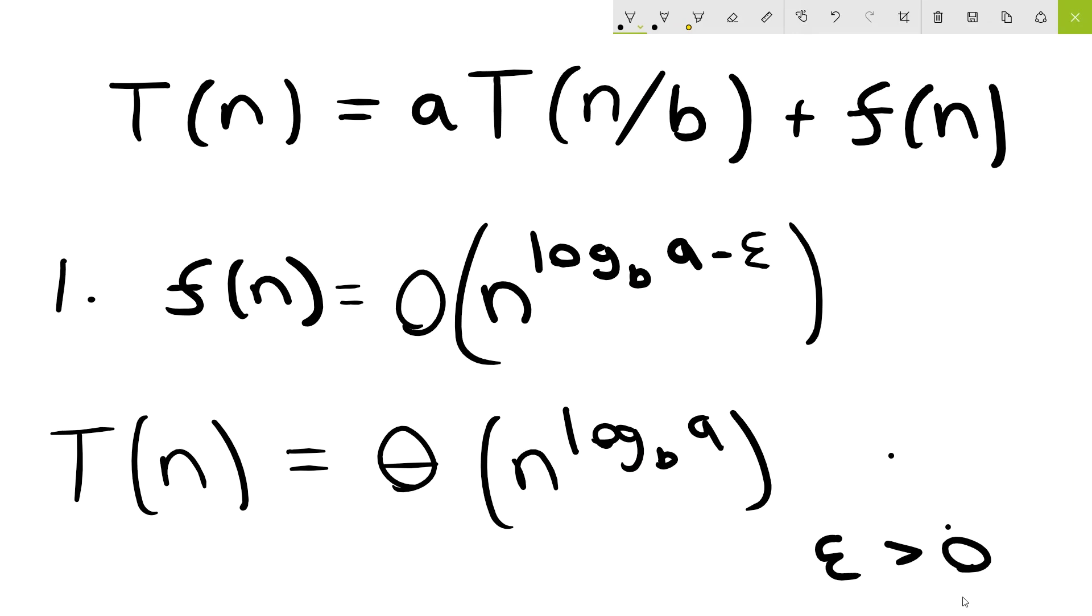So why is that? Well, if f of n is o of n log base b of a minus epsilon, then the n log base b of a is the dominant term. So this part of the recurrence is dominant. As a result, the overall asymptotic runtime is bounded by that term.